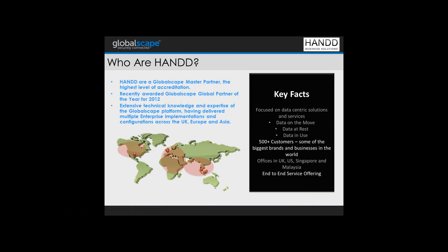Hand are a GlobalScape master partner, the highest level of accreditation. We were recently invited by GlobalScape to Texas in the United States, where we were awarded GlobalScape partner of the year for 2012. We have extensive knowledge of the GlobalScape platform, having delivered multiple enterprise implementations and configurations across the UK, Europe and Asia. Hand are a data-centric solutions and services provider. We provide solutions that help protect organisations' data at all stages — data on the move, data at rest and data in use. We have over 500 customers, some of the biggest brands and businesses in the world. We're a global organisation with offices in the UK, the US, Singapore and Malaysia.